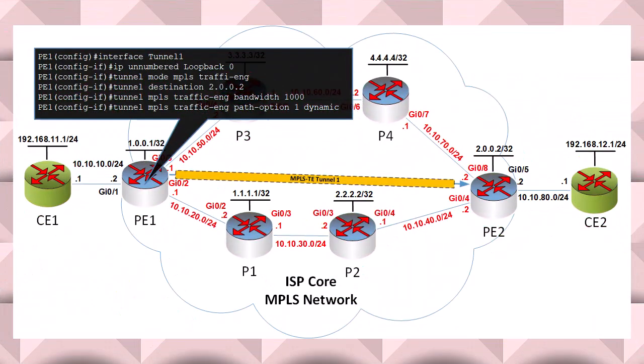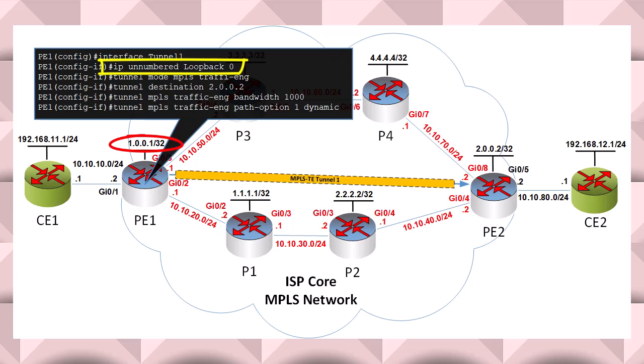On PE1 we have the following configuration. These commands were used to establish the LSP tunnel. For our purposes of routing, we need to know the tunnel number so that we can statically route traffic out of that interface. Also make note of the IP unnumbered loopback 0 command. This simply tells the router that we have no specific IP address assigned to the tunnel interface, but it should simply adopt the IP address of the loopback 0 interface. Keep that in mind and you'll see why shortly.